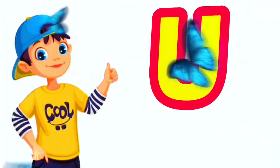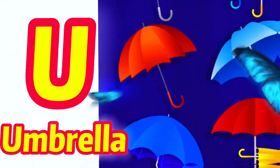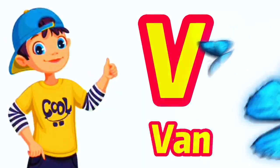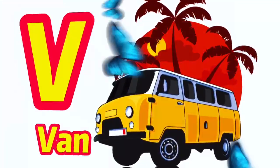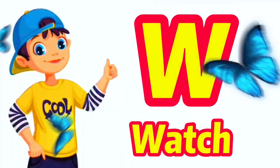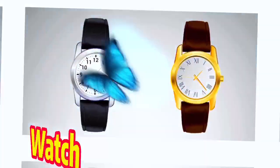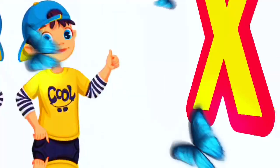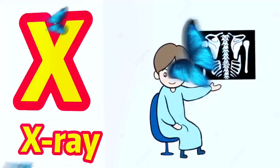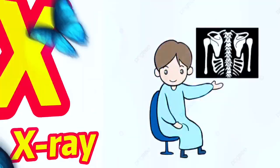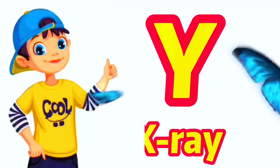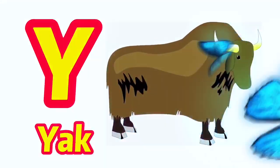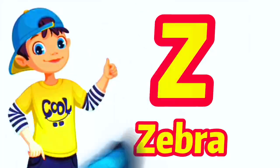U for umbrella, V for well, W for vhach, X for x-ray, Y for yak, Z for zebra.